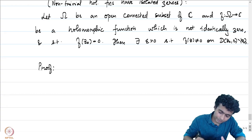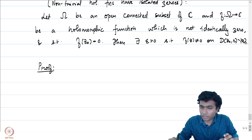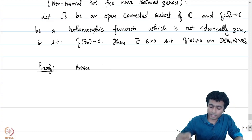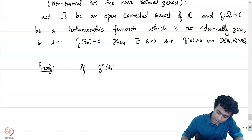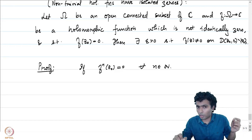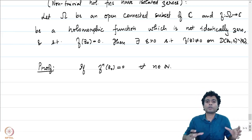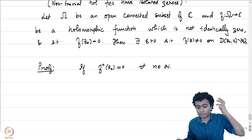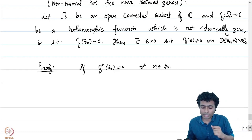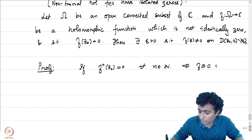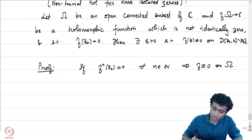For the proof, the first observation is that not all derivatives of f at z0 can vanish. If f^(n)(z0) equals 0 for all n, then the power series expansion of f in a neighborhood of z0 would have all coefficients equal to 0, making f equal to the zero function in that neighborhood. By the principle of analytic continuation, f would then be identically zero on all of omega — contradicting our assumption.